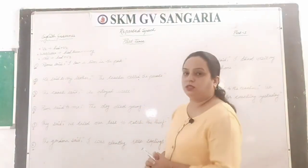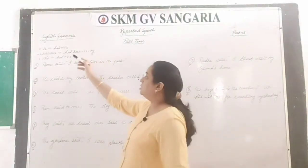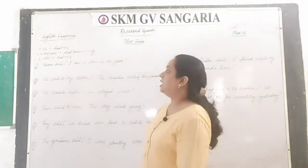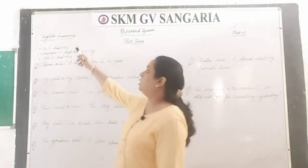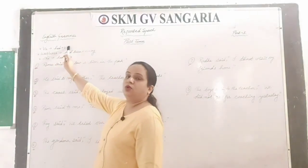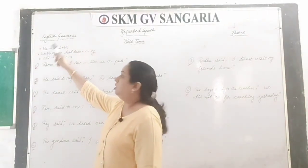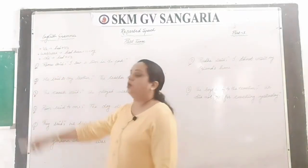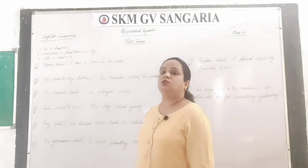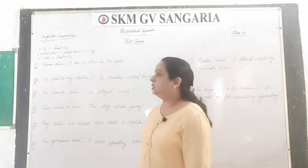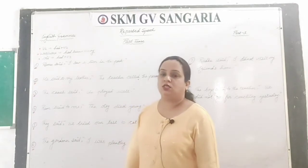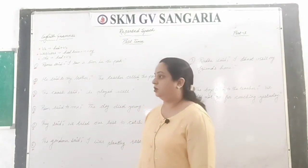Let's revise the rules. When verb second, means simple past, is given to you, that changes into had plus verb third. When was/were is given, that changes into had been plus verb first plus ing. If did is given in the question, that changes into had plus verb third.